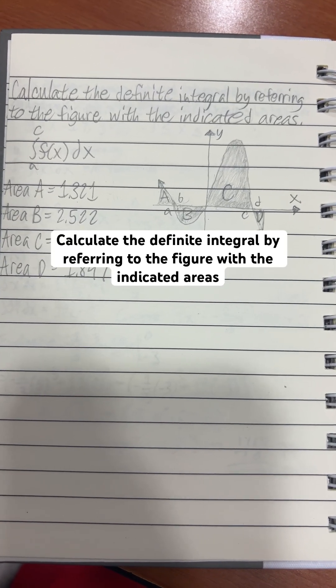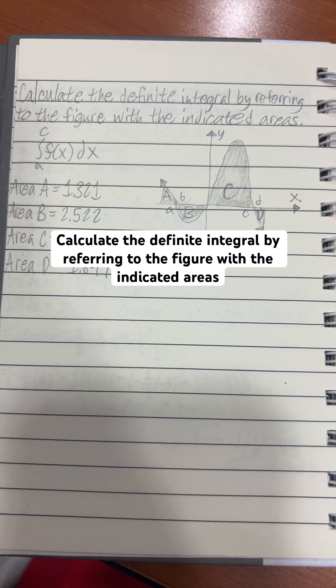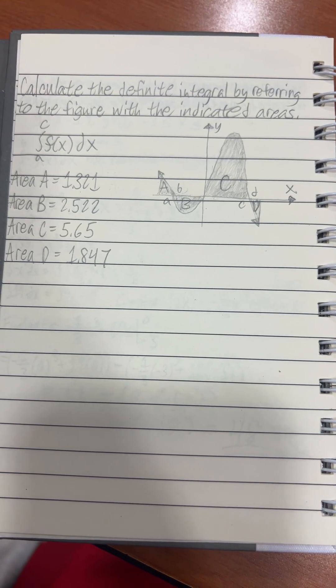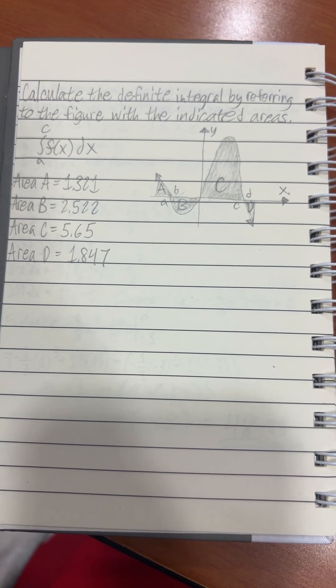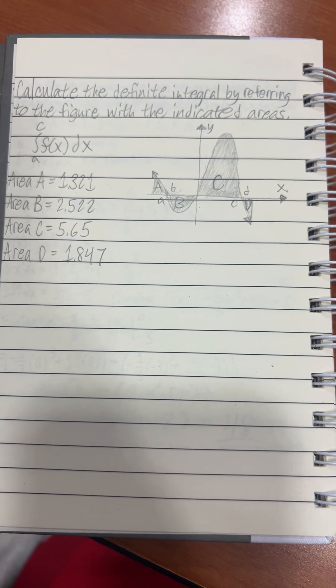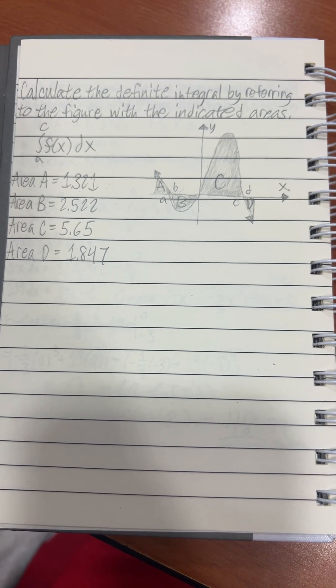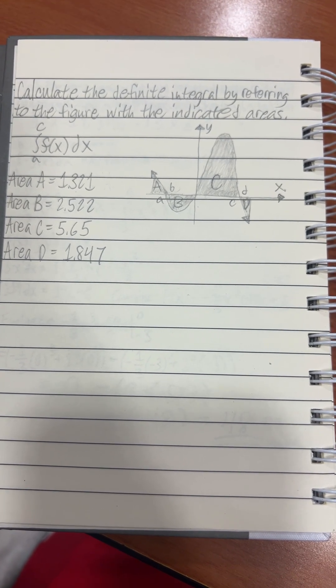Calculate the definite integral by referring to the figure with the indicated areas. So we got the integral a to c of f of x with respect to x. We got area A equals 1.321, area B is equal to 2.522, area C is equal to 5.65, and area D is equal to 1.847.